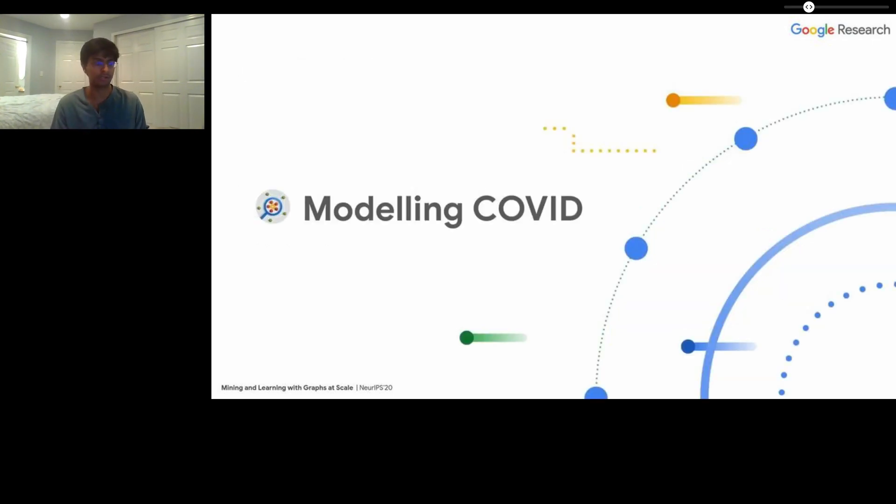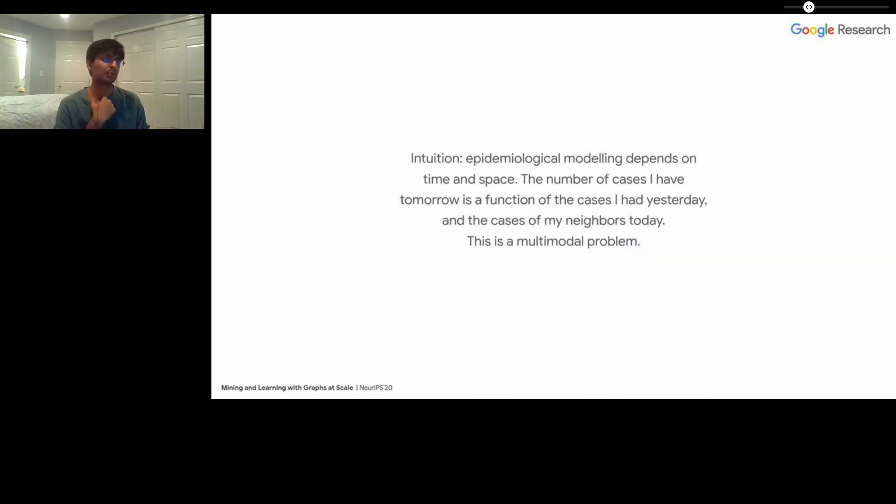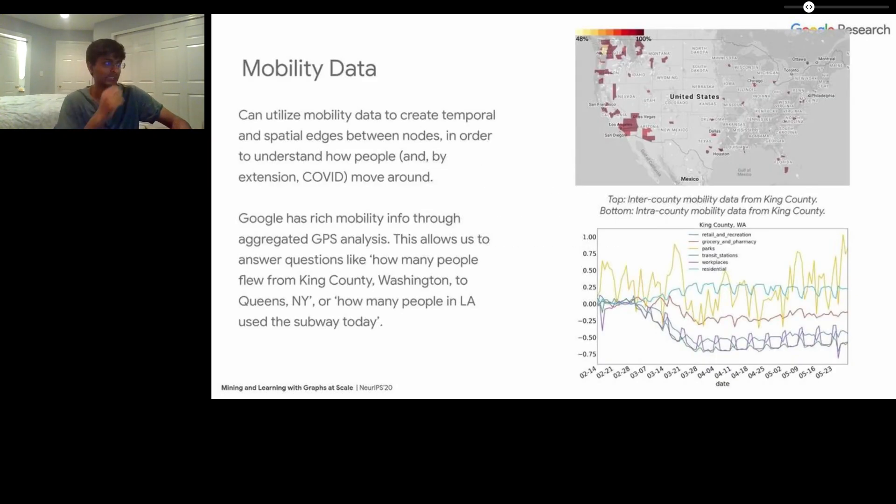So how did we actually go about modeling COVID? Our intuition was that epidemiological modeling depends on time and space. The number of cases that a county or a given location has tomorrow is a function of the cases that that county had yesterday and the cases that its neighbors had today. This is fundamentally a multimodal problem - we're dealing with time and space as two of our modalities. It's fundamentally a graph problem because it's very easy to model these different locations as nodes in an underlying mobility graph. So that's exactly what we did. We wanted to use mobility data to create a temporal and spatial graph where the underlying node represents a location and a place in order to understand how people, and by extension COVID, move around.